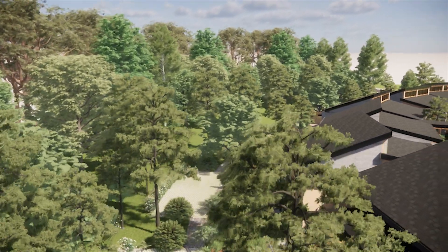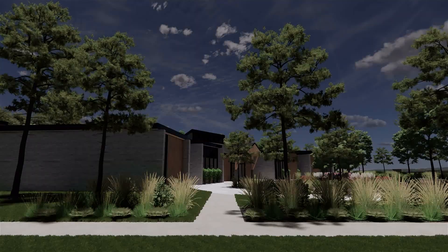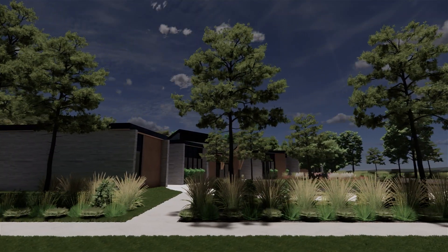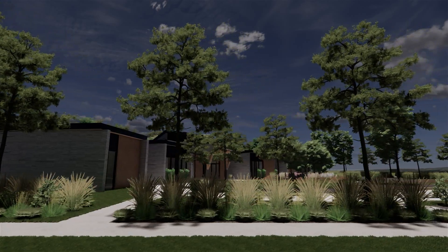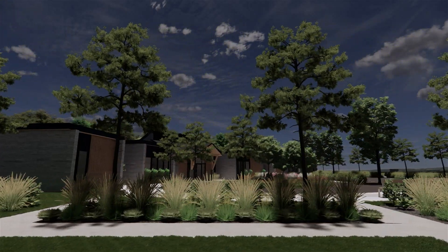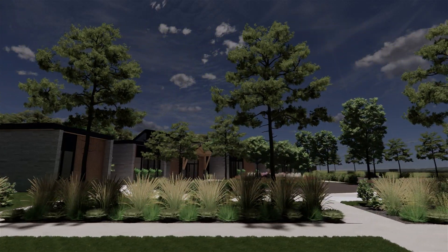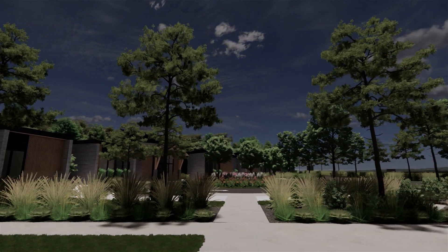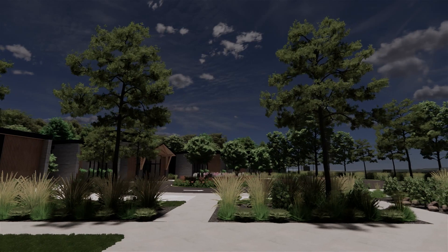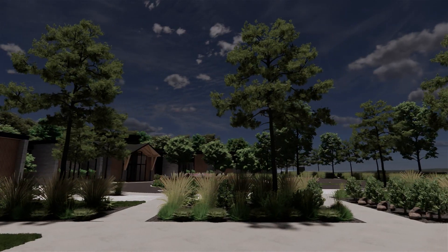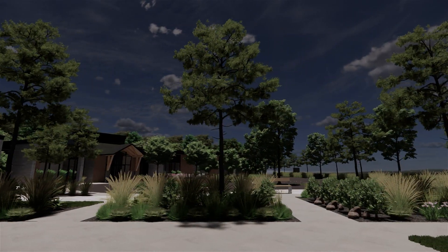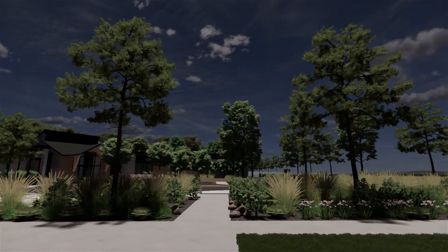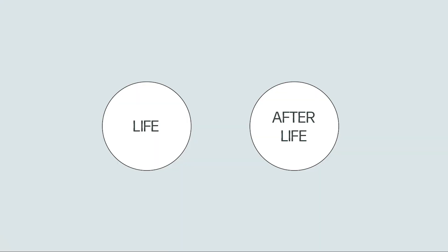It was very important to me to respond directly to the site and its surroundings. At a macro level, the neighbourhood we are in is primarily residential, especially taking into consideration the new residential development across the street. For that reason, I considered the materiality, the landscaping, the scale of the building, and the shape of the roof to work in harmony with what is already existing.